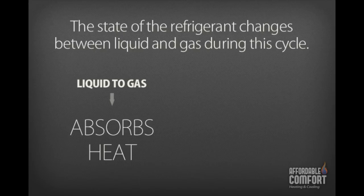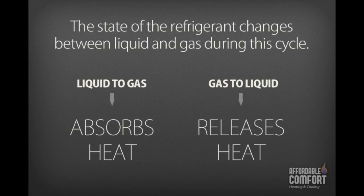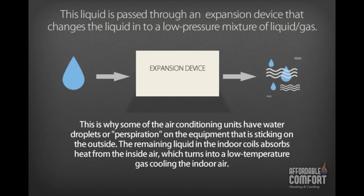When it changes from liquid to gas, it absorbs the heat. Then, when it goes back to a liquid from a gas, it releases the heat. This liquid is passed through an expansion device that changes the liquid into a low-pressure mixture of liquid and gas. This is why some air conditioning units have water droplets or perspiration on the equipment on the outside. The remaining liquid in the indoor coils absorbs heat from the inside air, which turns it to low-temperature gas, cooling the indoor air.